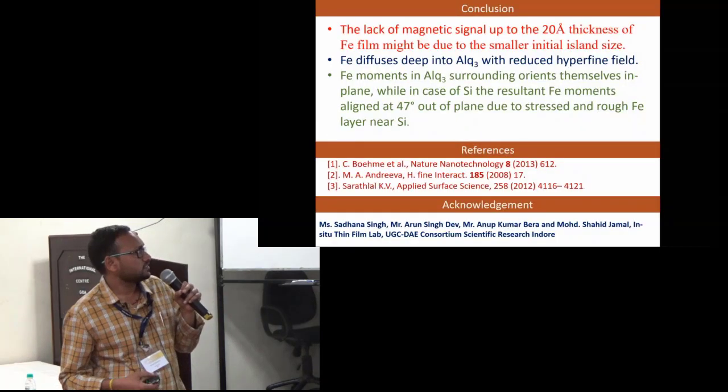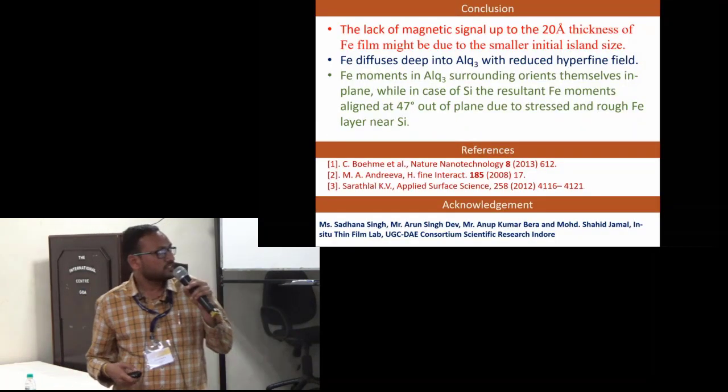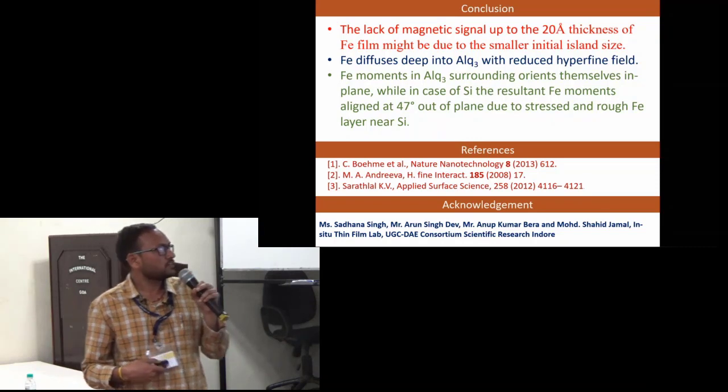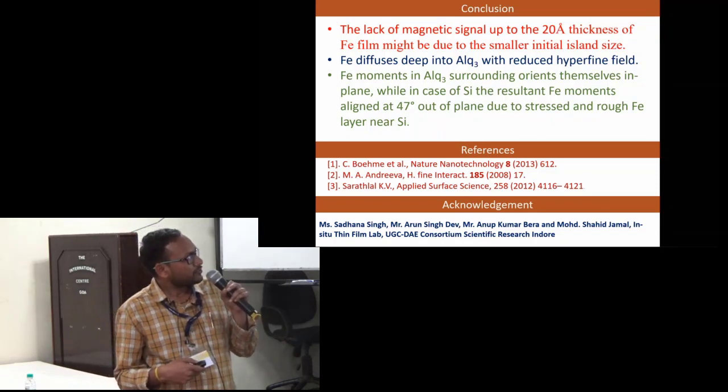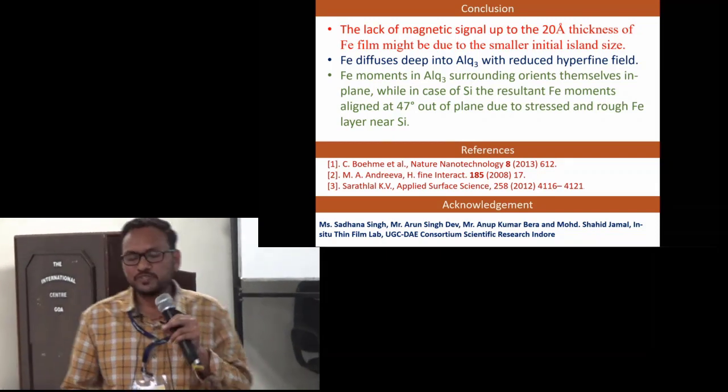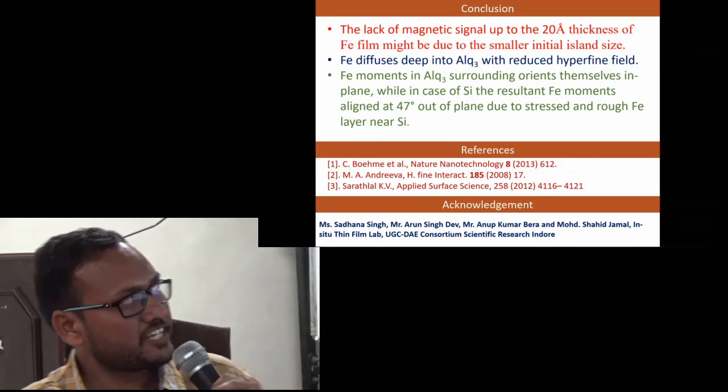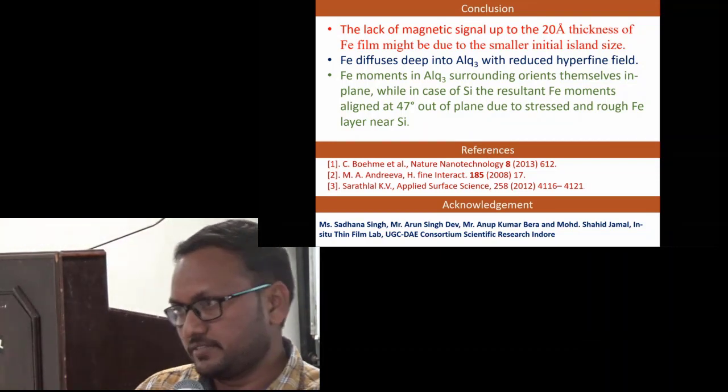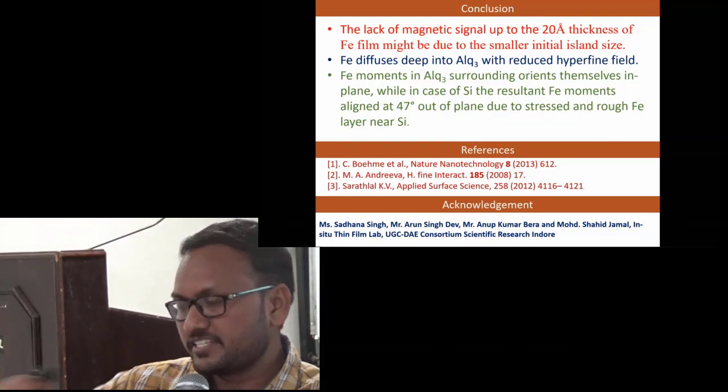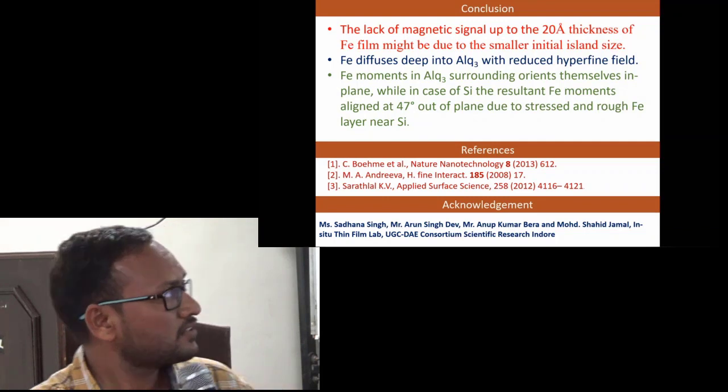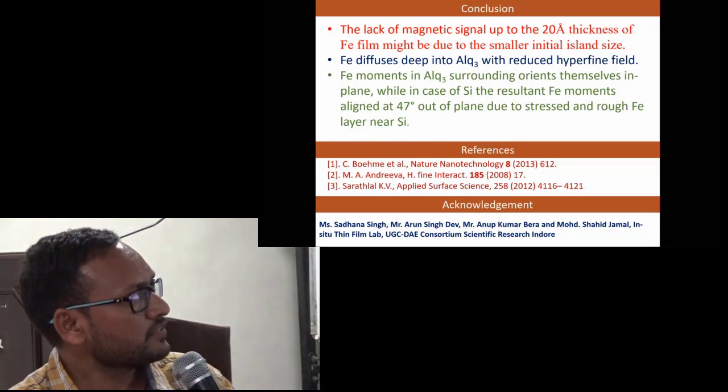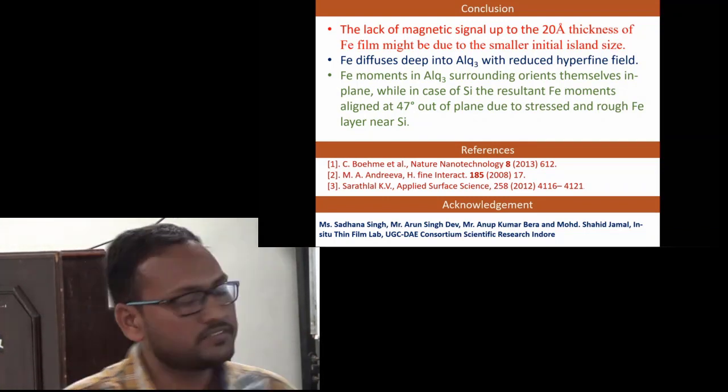Here I conclude with this. I get the 20 angstrom magnetically dead layer, this is due to the small initial island growth mechanism. Fe deposits deep into the Alq3 matrix, and this diffusion increases at higher and higher temperature, and we get reduced hyperfine field. Thank you.